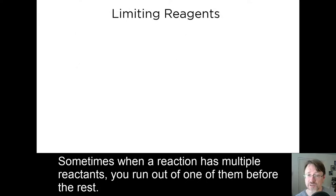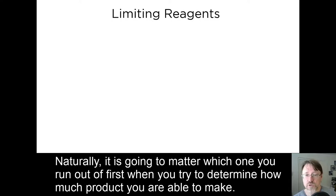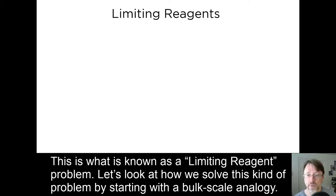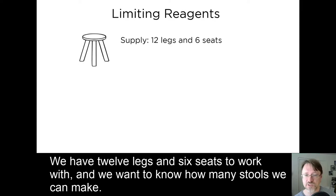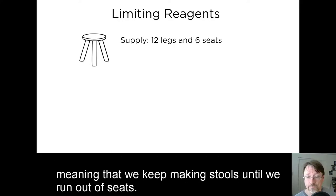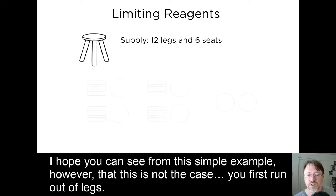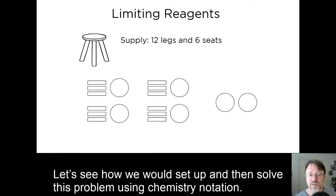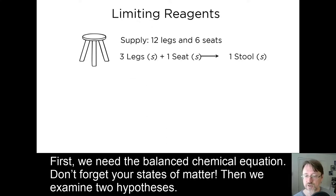Sometimes, when a reaction has multiple reactants, you run out of one of them before the rest. Naturally, it's going to matter which one you run out of first when you're trying to determine how much product you are able to make. This is what is known as a limiting reagent problem. Let's look at how we solve this kind of problem by starting with a bulk scale analogy. Suppose we were making three-legged stools. We have 12 legs and 6 seats to work with. And we want to know how many stools we can make. A common mistake that is made is to look at these numbers and say 6 is smaller than 12, so the seats are the limiting reagent. Meaning that we keep making stools until we run out of seats. I hope you can see from this simple example, however, that this is not the case. You first run out of legs. Let's see how we would set this up and then solve this problem using chemistry notation. First, we need a balanced chemical equation. Don't forget your states of matter.